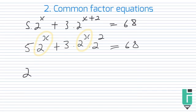So taking out 2^x, we can multiply that by 5 plus 3·2^2, all of that equals 68.